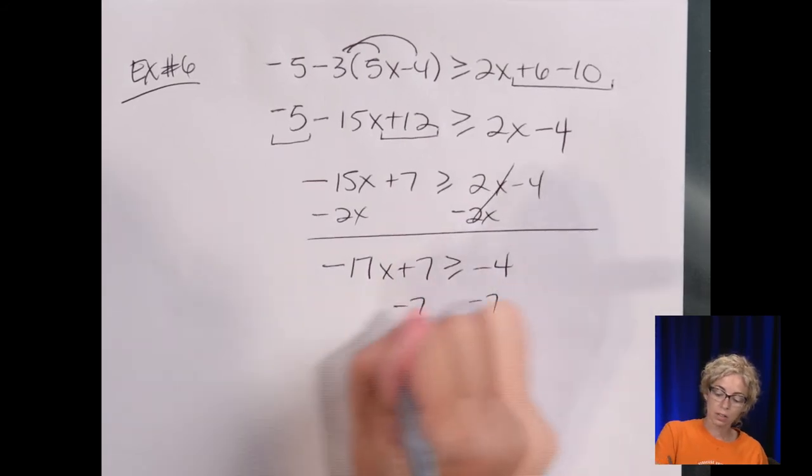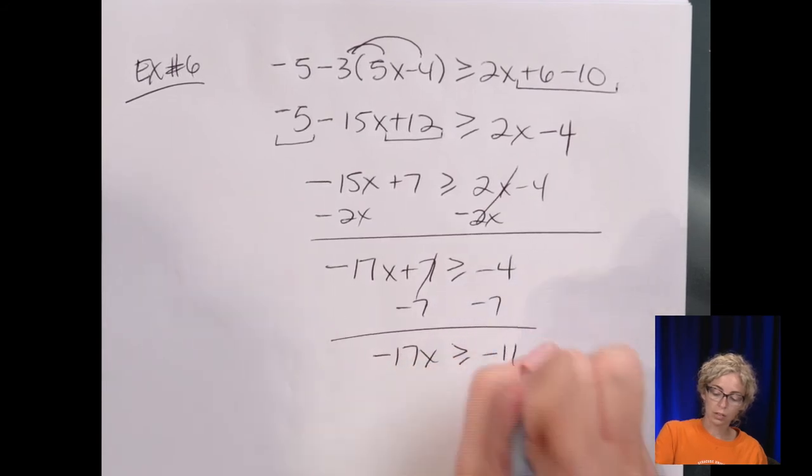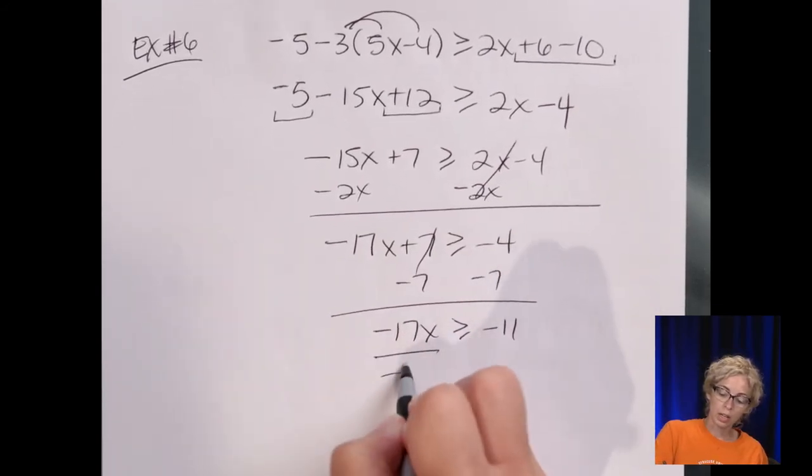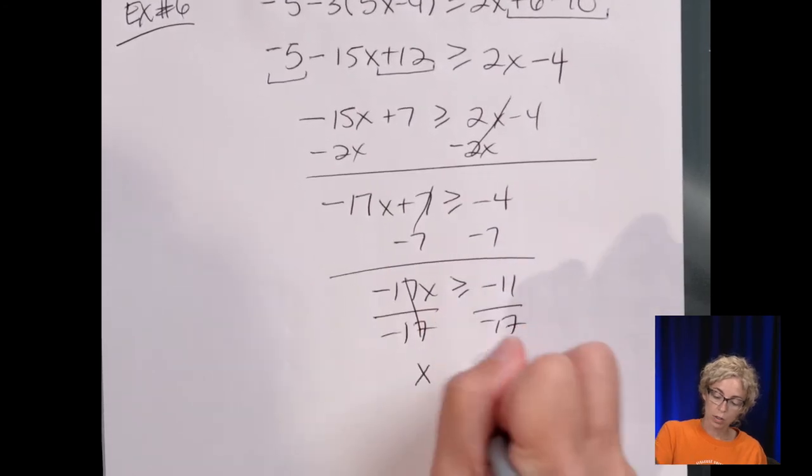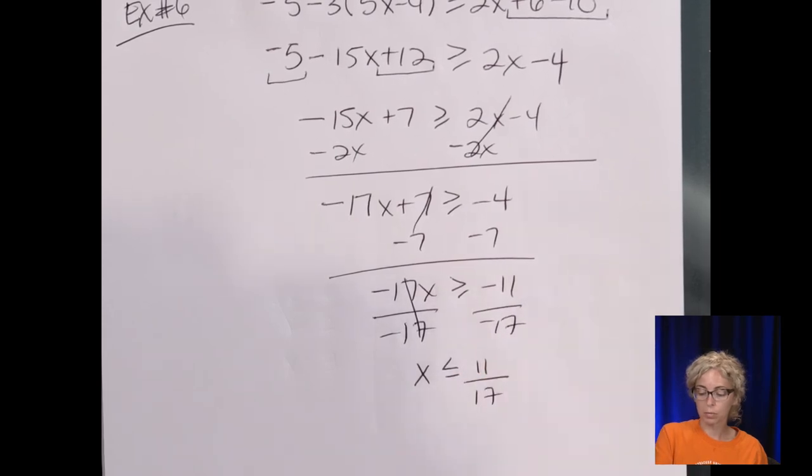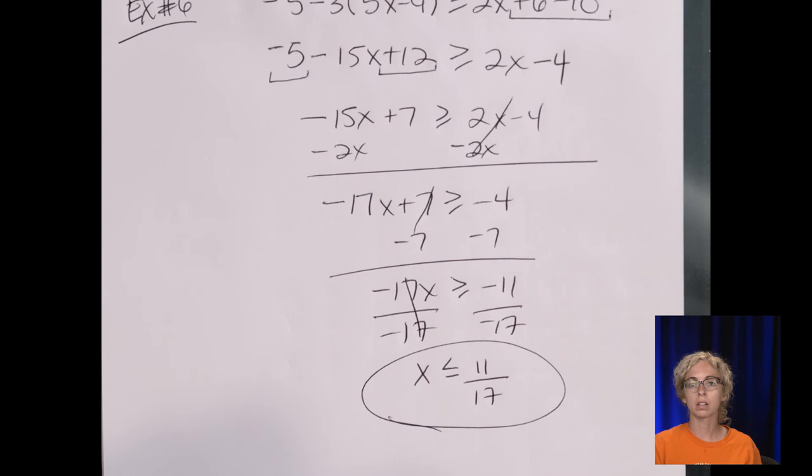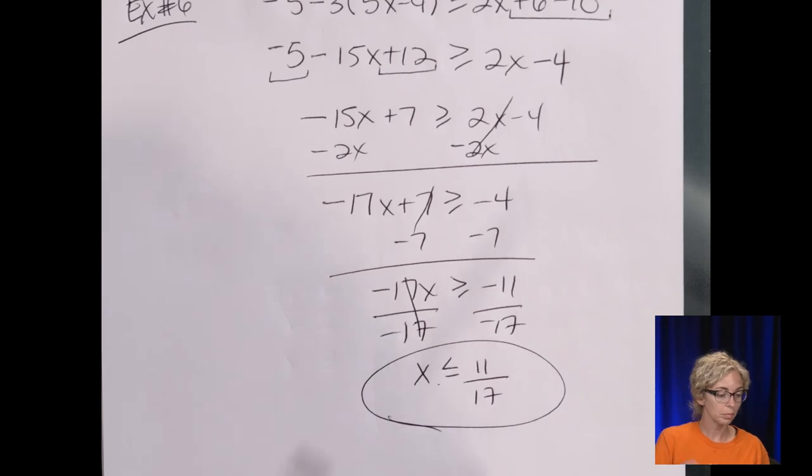So, again, I said I like my x's on this side. So, I'm going to subtract 2x. And, I get -17x + 7 is greater than or equal to -4. Subtract the 7. -17x greater than or equal to -11. So, then divide by -17. And, I have to reverse the symbol. And, then I'm just going to leave it 11/17. Negative over negative is positive. So, instead of the greater than or equal to, it's now less than or equal to.